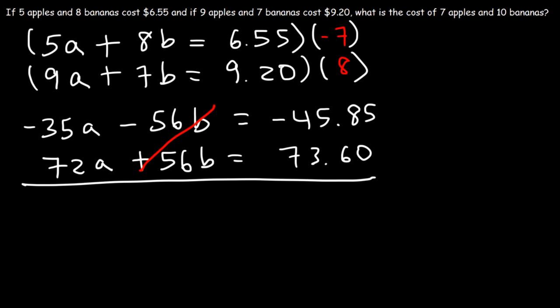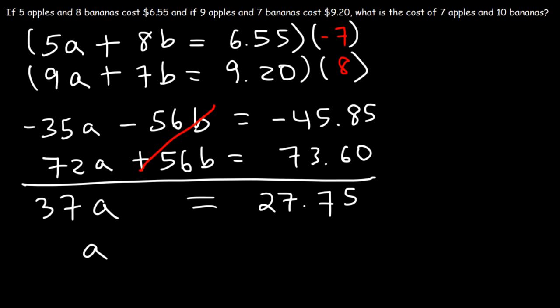Adding the two equations: negative 35 plus 72 is 37a, the b terms cancel, and negative 45.85 plus 73.60 is 27.75. So a equals 27.75 divided by 37, which gives the cost of each apple as 75 cents.